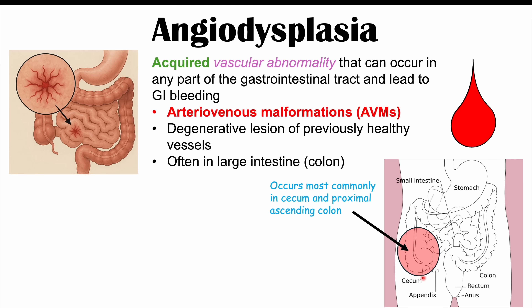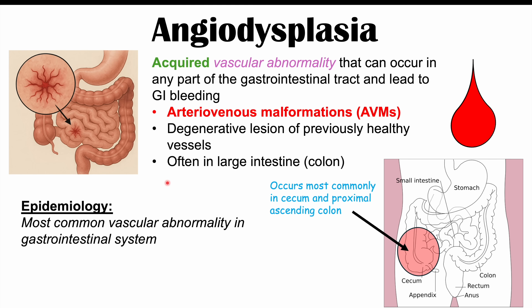About 15% of cases occur in the ileum — the last part of the small intestine — and the jejunum, the second part of the small intestine. These lesions are generally small, less than five millimeters in size, and they are the most common vascular abnormality in the GI system. Prevalence increases with age, especially after 60 and 70.